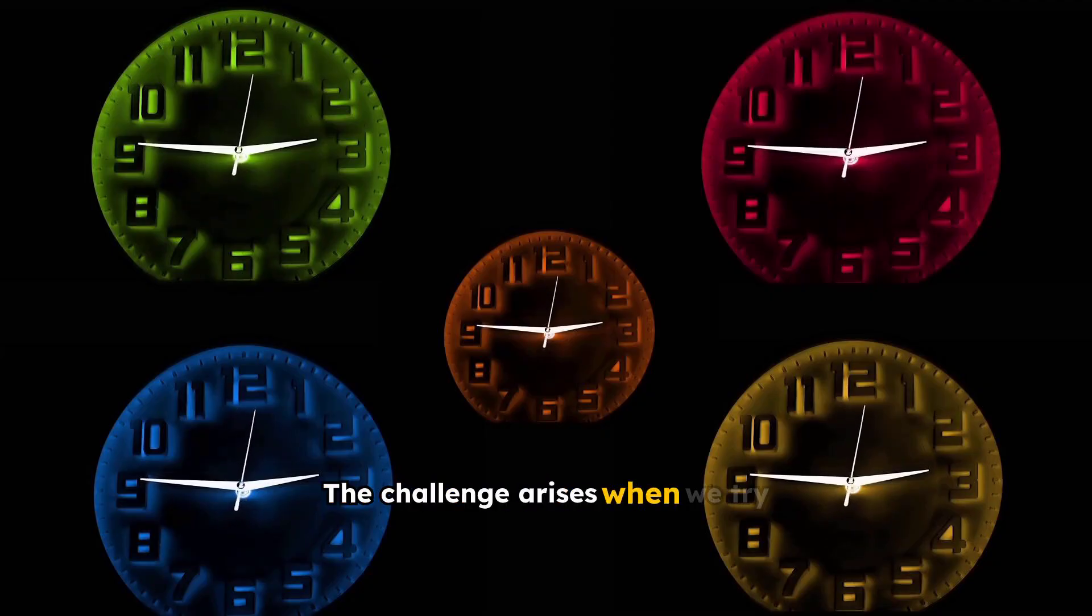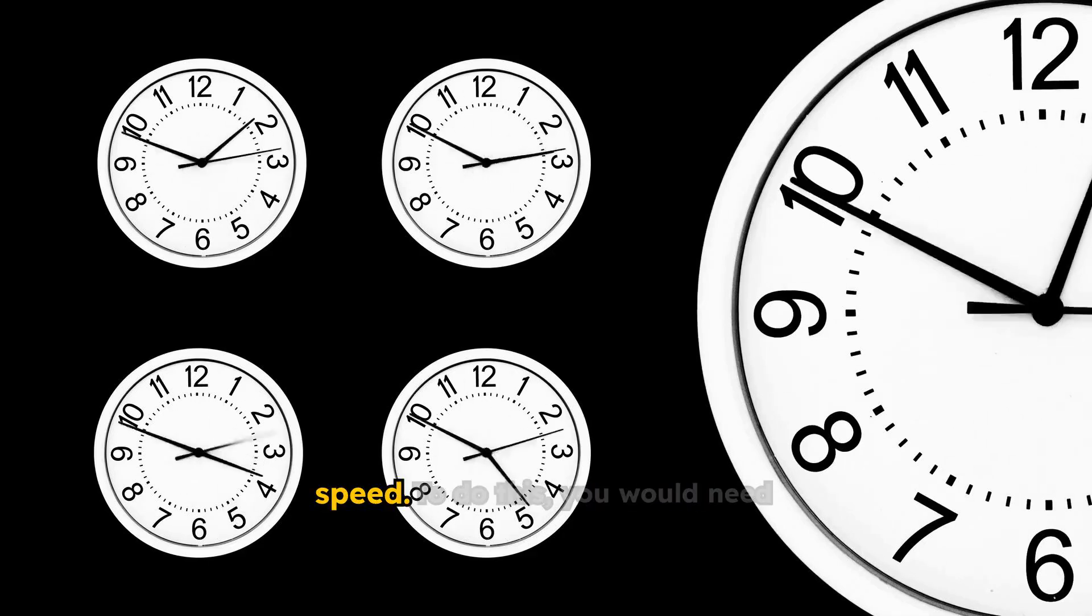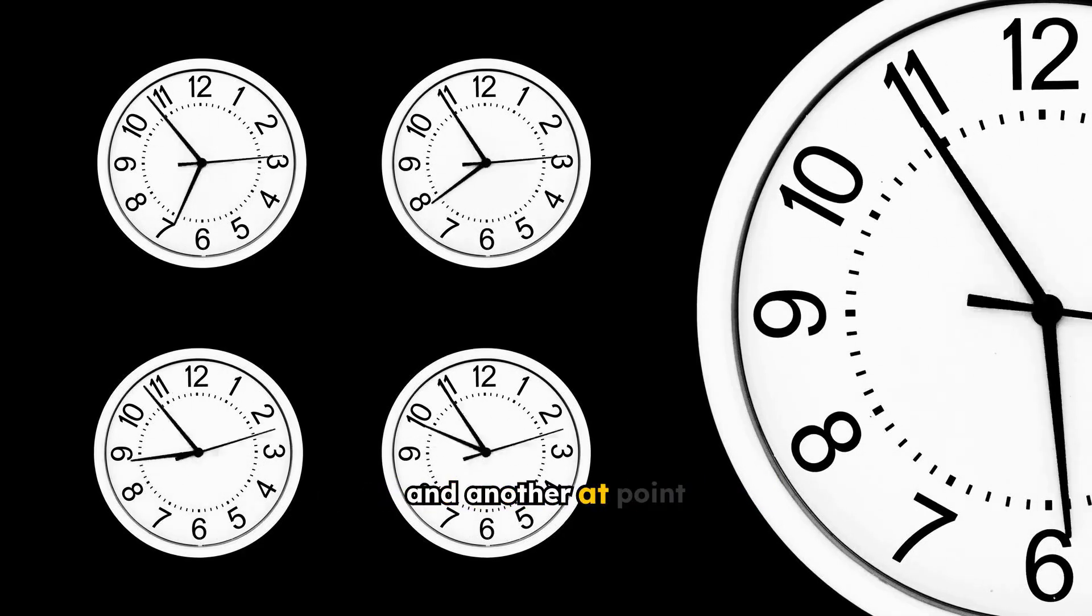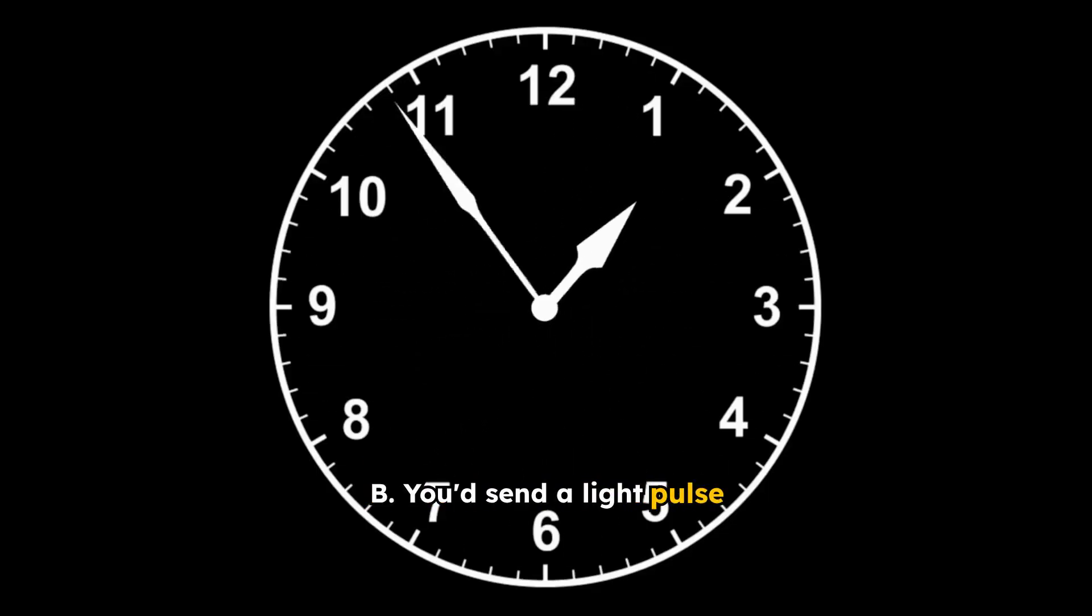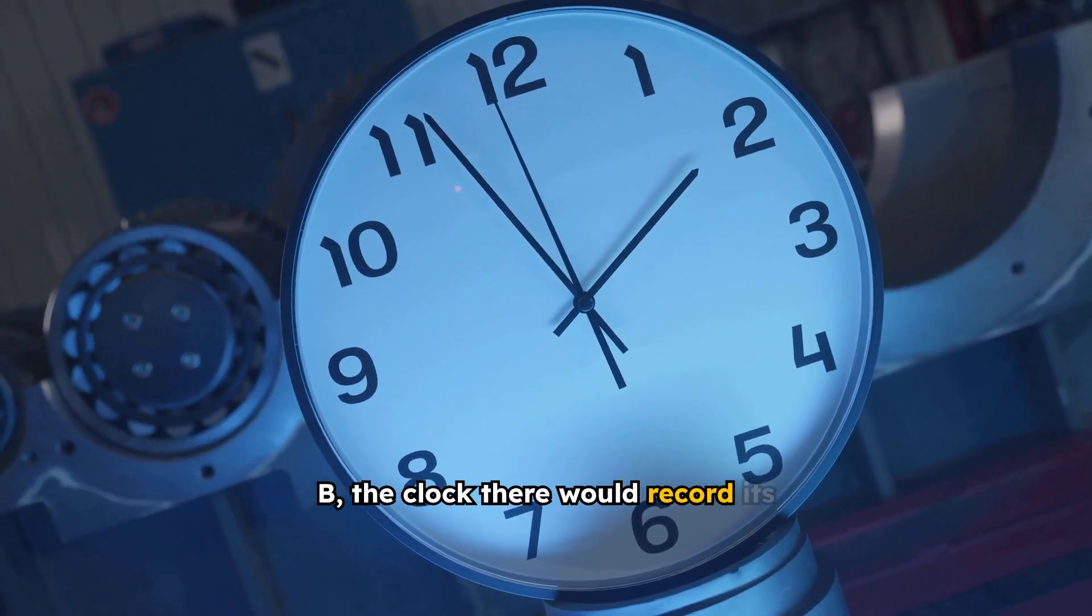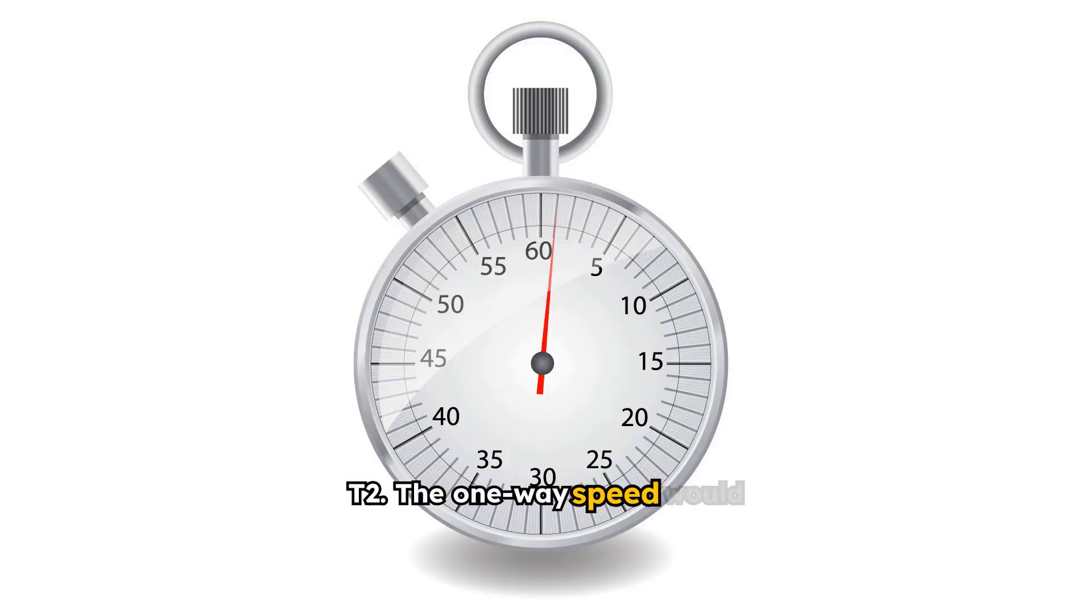The challenge arises when we try to measure the one-way speed. To do this, you would need two perfectly synchronized clocks, one at point A and another at point B. You'd send a light pulse from A at a specific time, say T1. When the light arrives at B, the clock there would record its arrival time, T2. The one-way speed would then be the distance between A and B divided by the difference T2 minus T1.